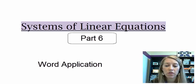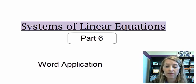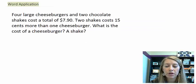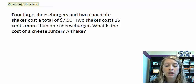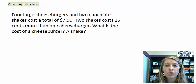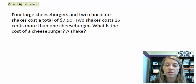Our last section is on solving systems of linear equations, and this covers the word application — meaning where would we actually use this in real life. I have an actual word application here: four large cheeseburgers and two chocolate shakes cost a total of $7.90. Two shakes cost 15 cents more than one cheeseburger. What is the cost of a cheeseburger and what is the cost of a shake? This is a real life example — you can figure out item costs by solving the system of equations, just like we've been doing in the last couple of examples.